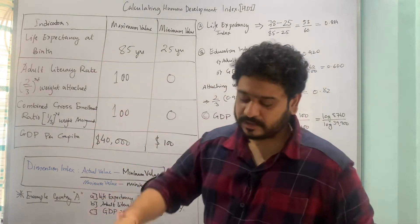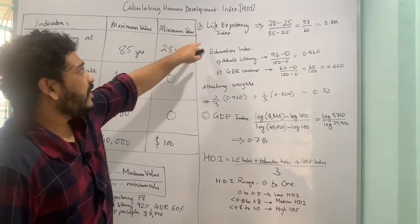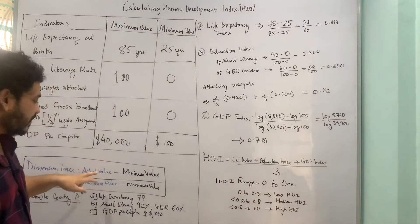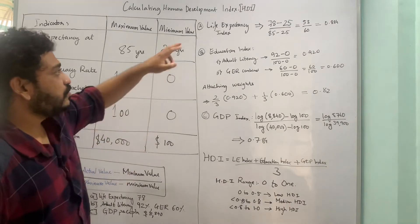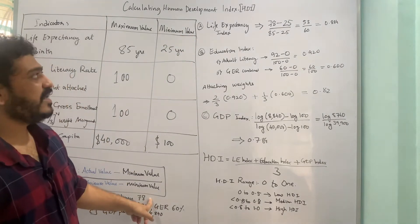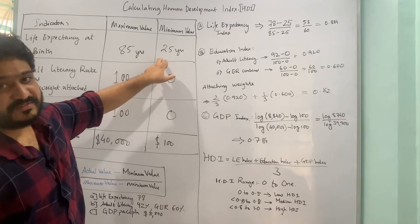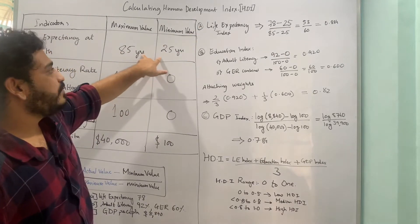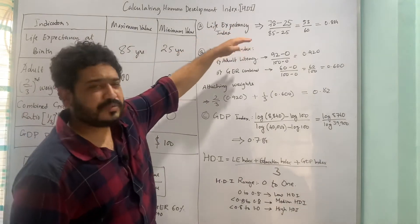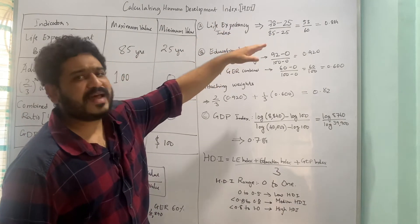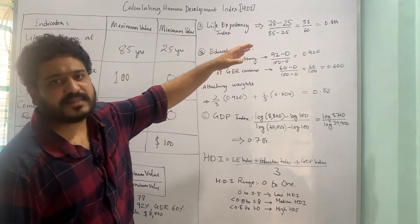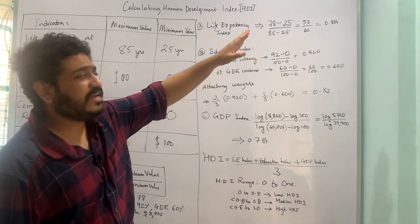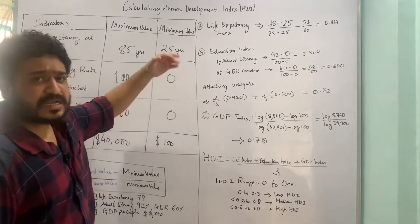For the life expectancy index, I apply the formula: actual value minus minimum value, divided by the range. So it is 78 minus 25, divided by 85 minus 25. This gives a value between 0 and 1, which is 0.884.